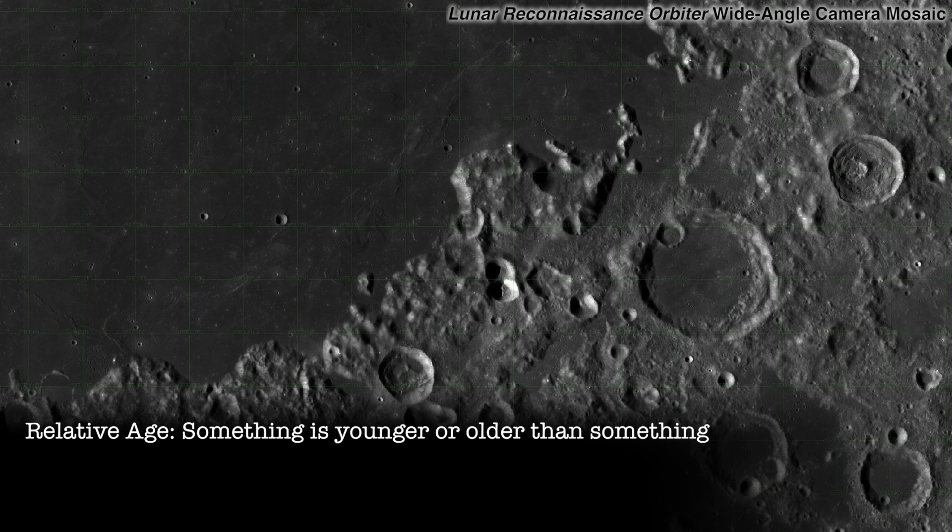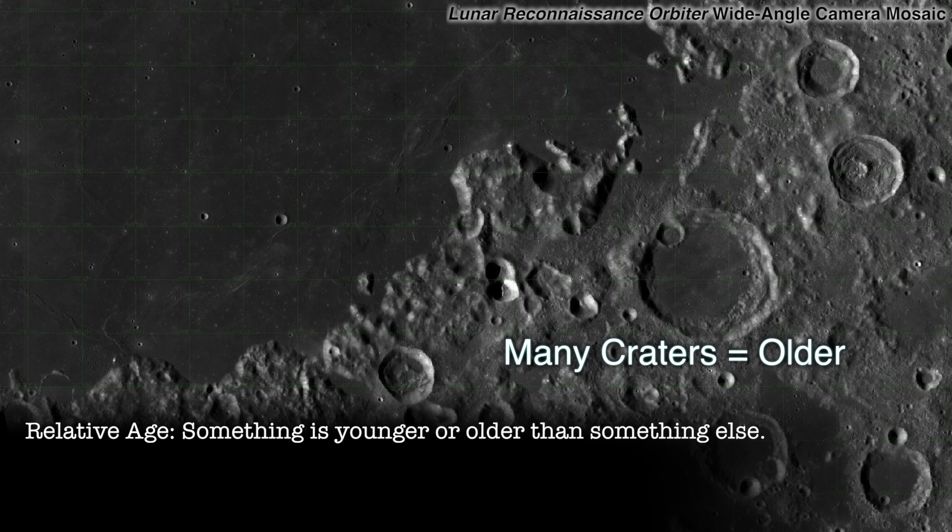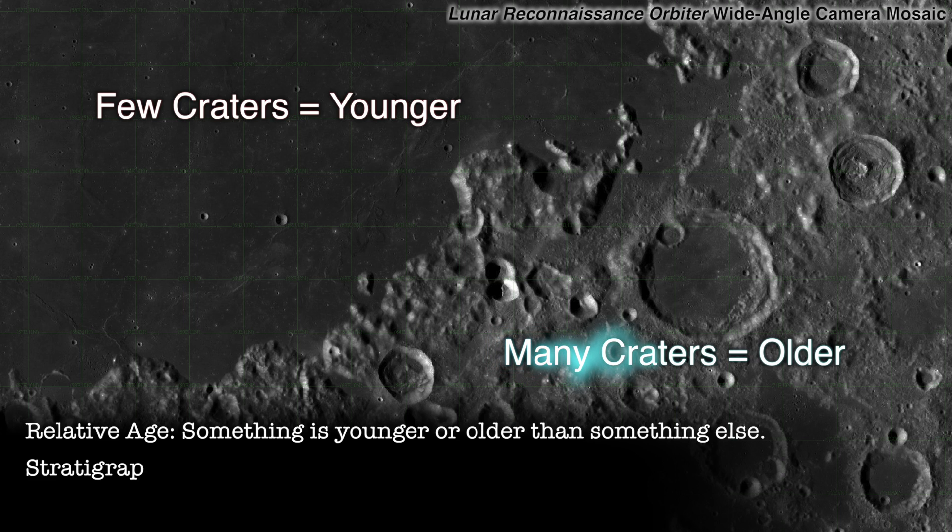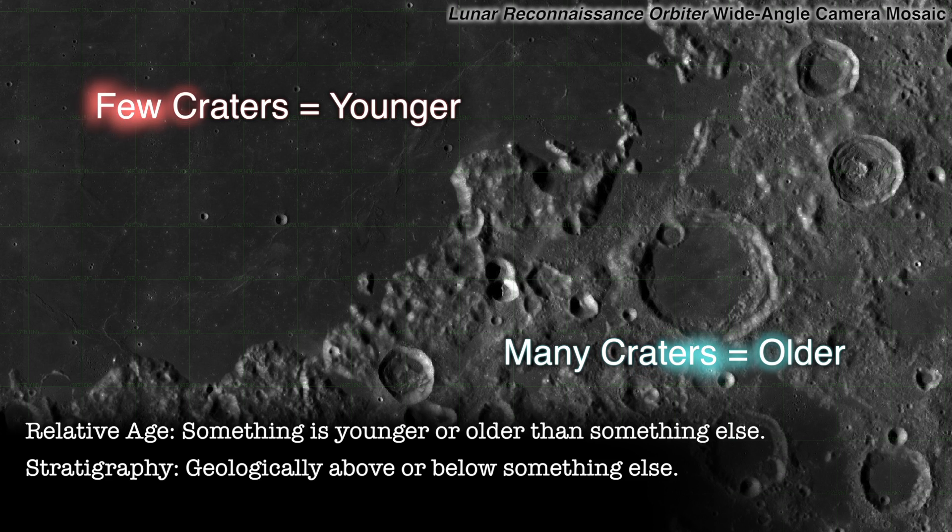This means that we can use craters as relative age markers. If a surface has a lot of craters, it should be older than a surface that has just a few craters because the more heavily cratered surface has had more time to accumulate them. We've used this basic idea for decades to understand the stratigraphy, the relative ages of the different regions of each solid planet, moon, and asteroid that we've seen in the solar system.